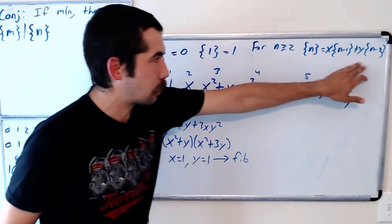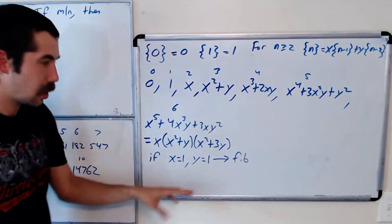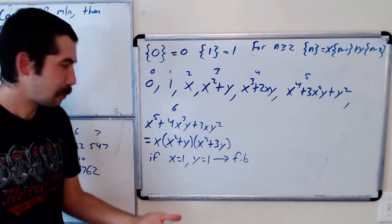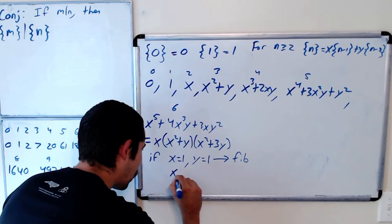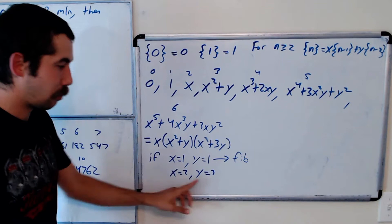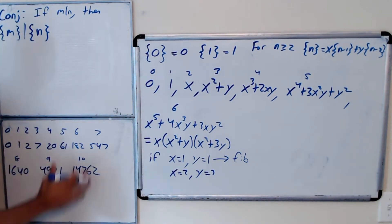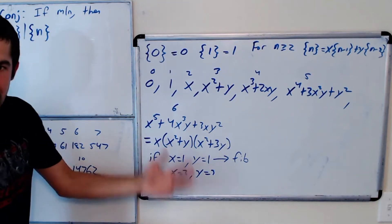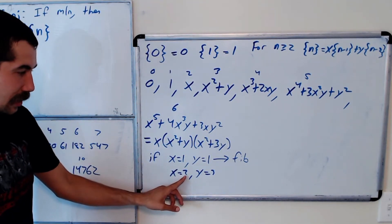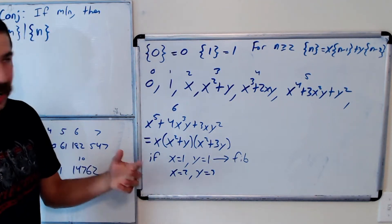It's the same exact recursion — the sum of the two previous terms with the same initial conditions. So subbing in x = 1 and y = 1 gives us the Fibonacci sequence. We could also sub in x = 2 and y = 3 to get the G sequence, or really any values we want.